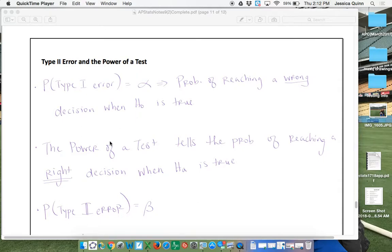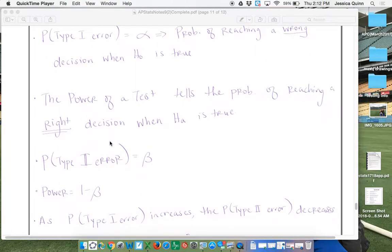The power of a test tells us the probability of reaching a correct decision when the alternative hypothesis is true. So it's the probability of not making a type 2 error. So the power of a test and type 2 errors are related to each other.